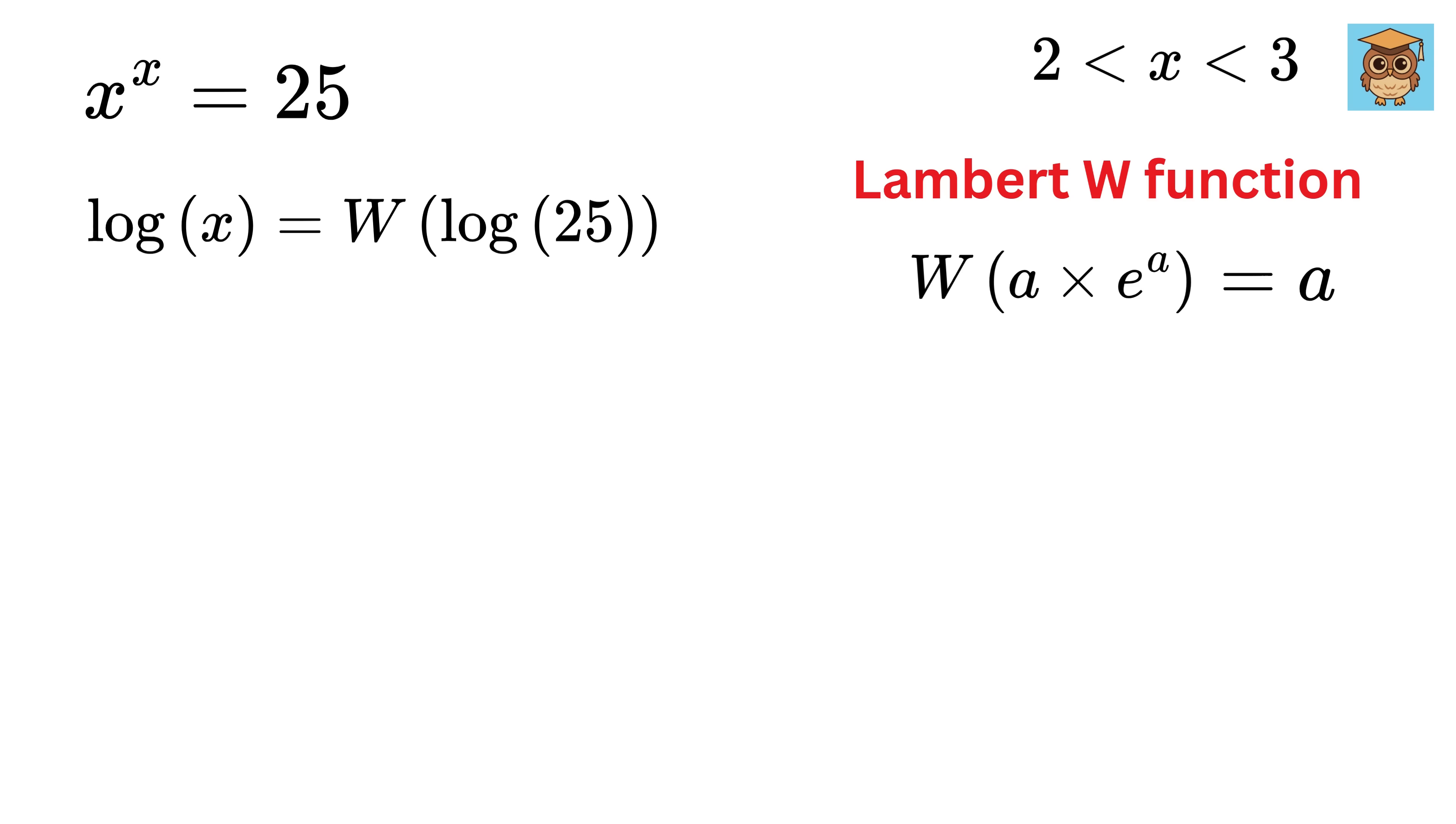Now we don't need the natural log of x, but we need the value of x. So to solve it further, we will create the base of e on both sides. This will give us e raised to the log of x equals e raised to W of natural log of 25. Now e raised to the log of x is x, and this is our right-hand side.